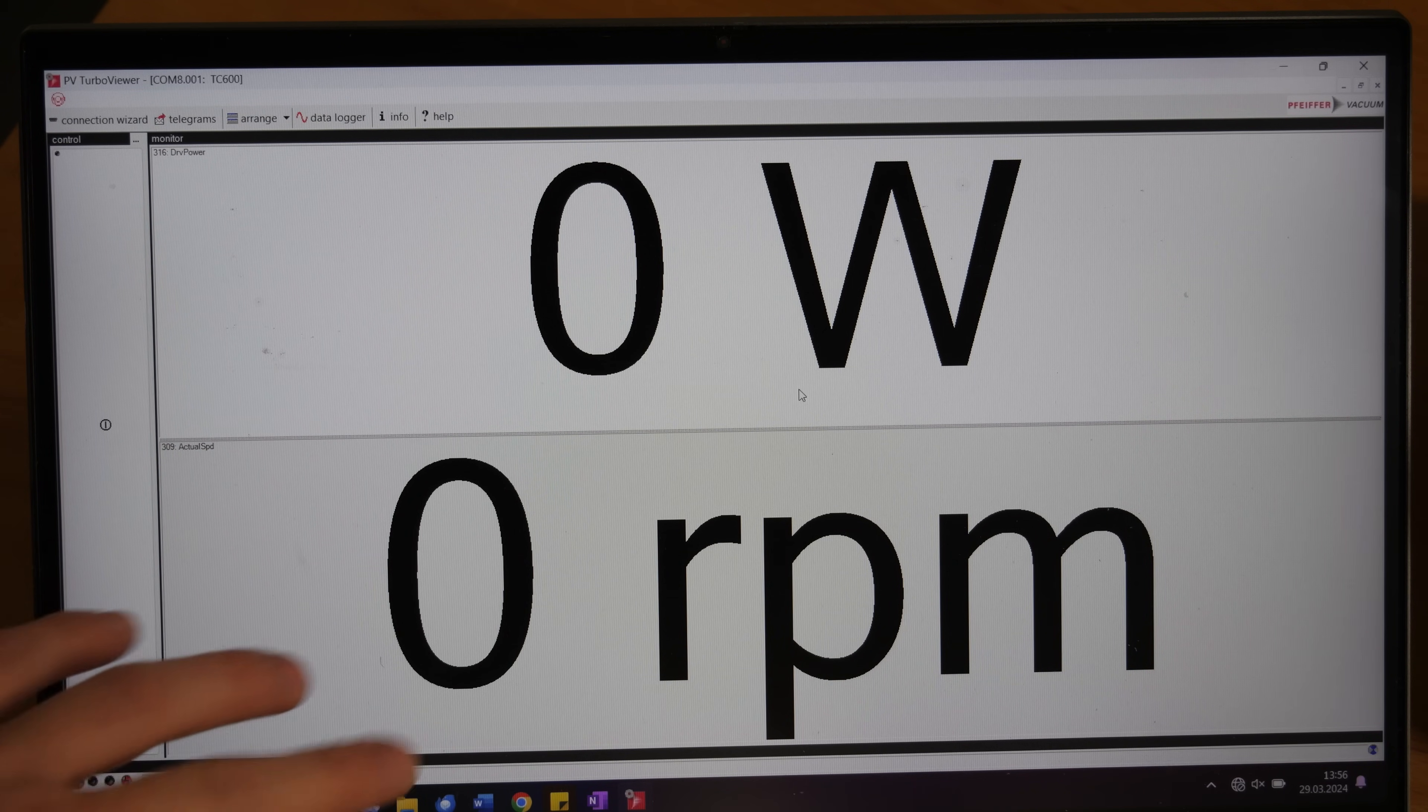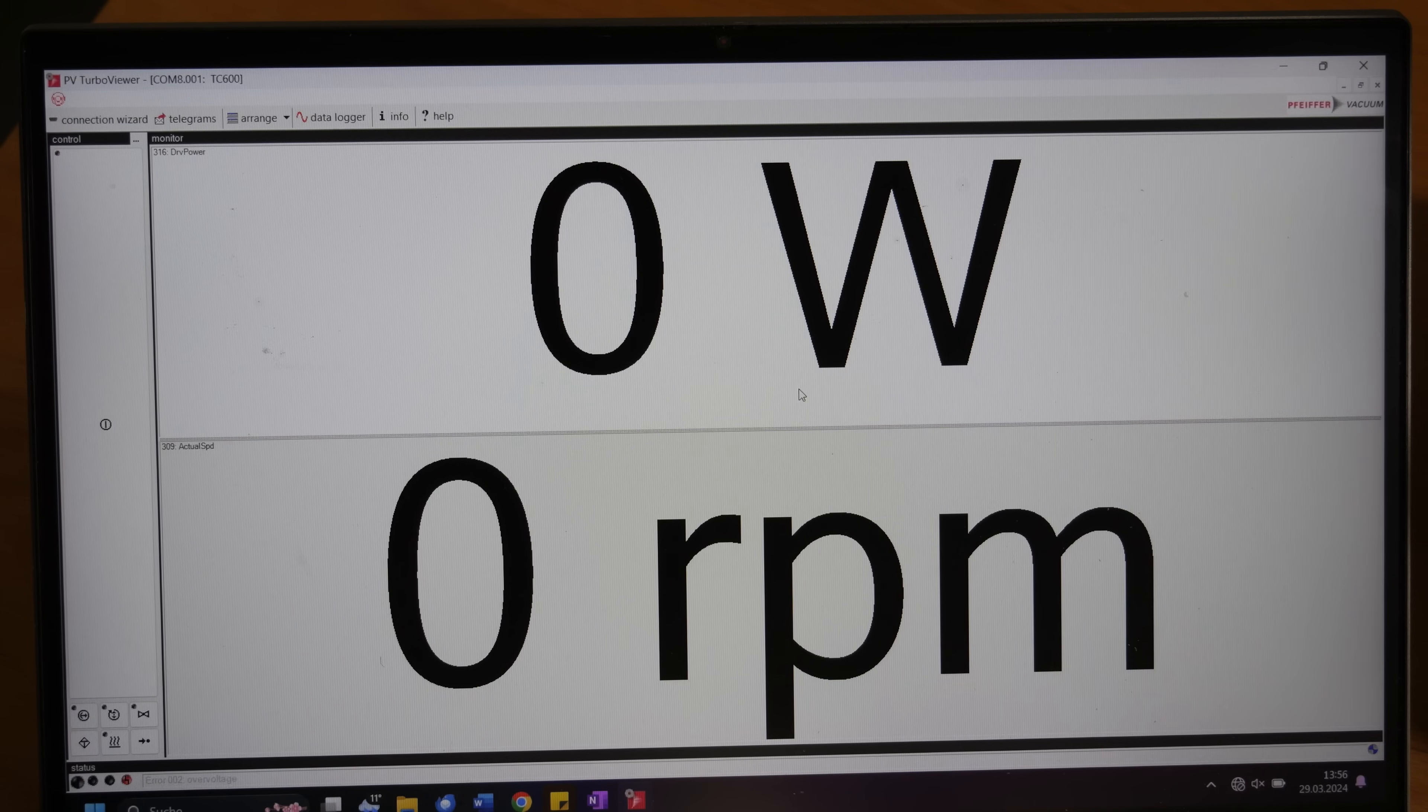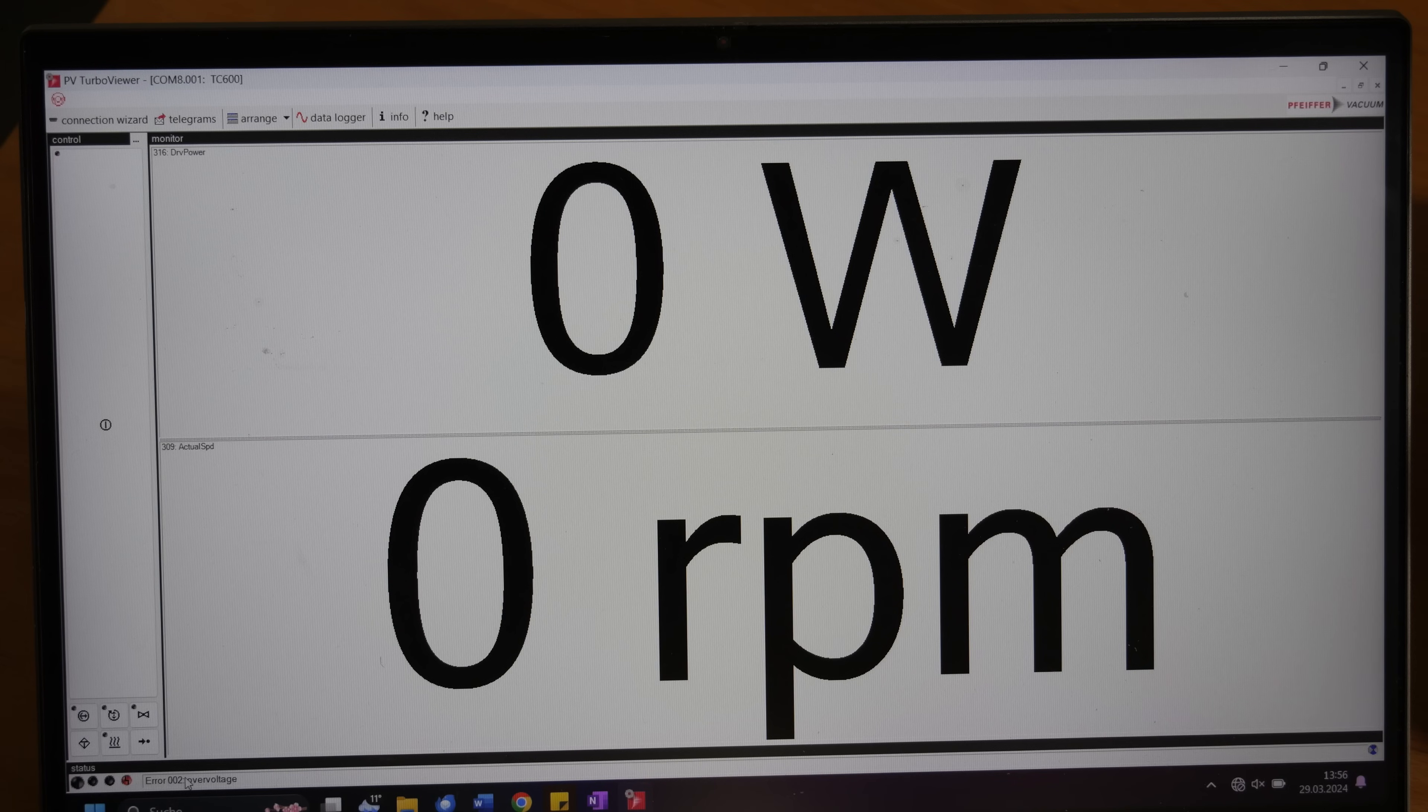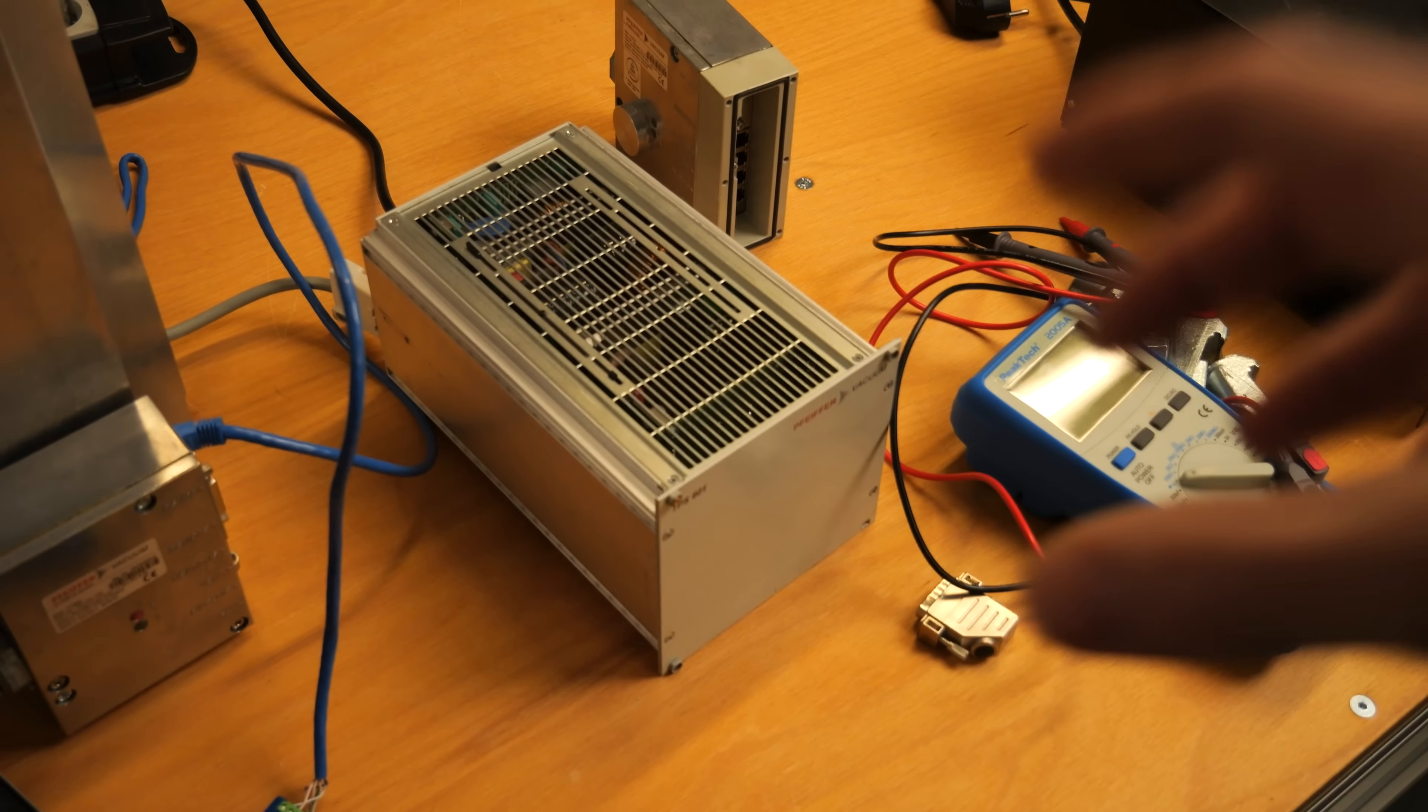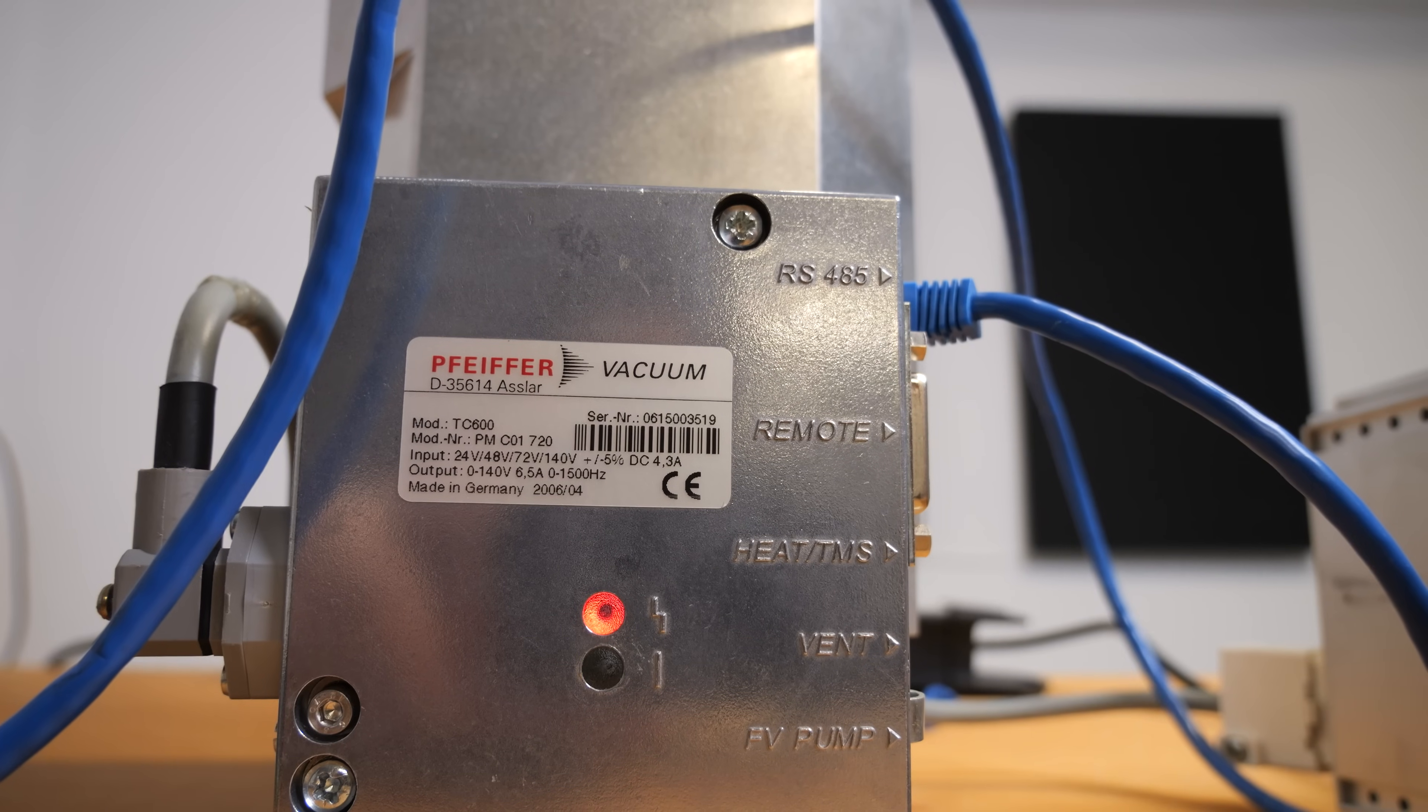Because you can see the revolutions per minute, the wattage and in general control the pump. But if you look at the bottom right here, you can see error 002 over voltage.